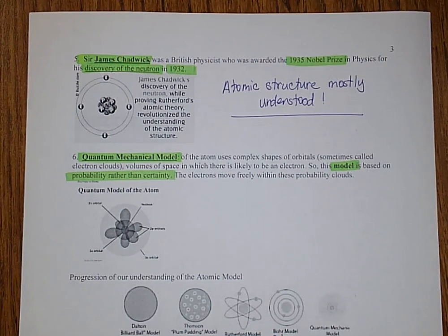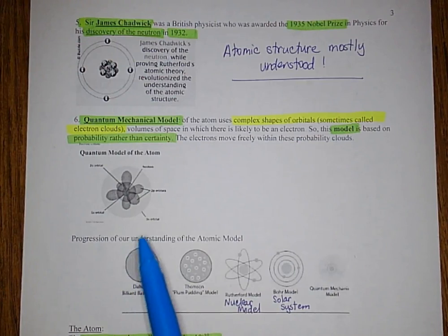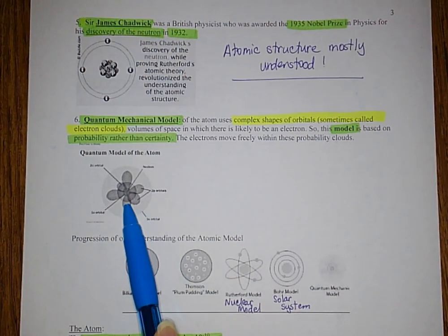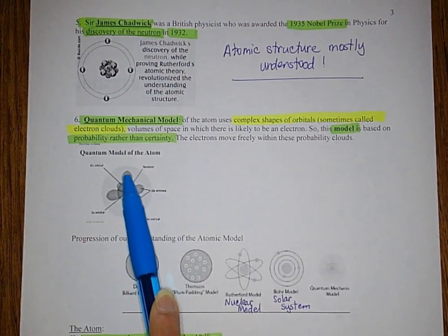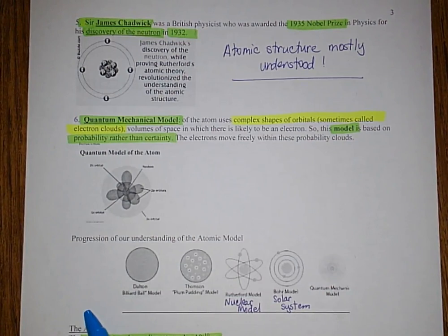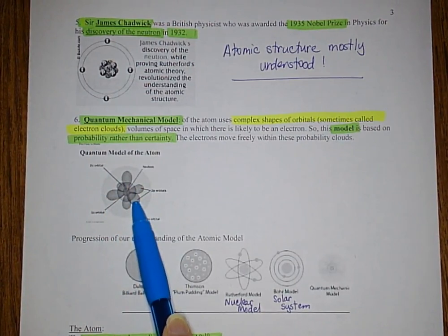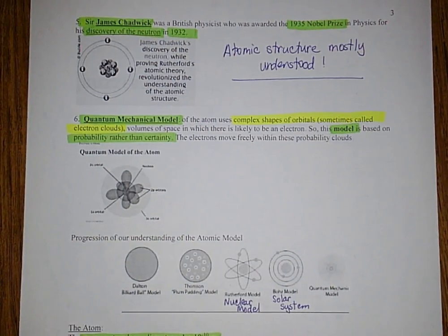The last model I want to discuss is the quantum mechanical model of an atom. This model says that electrons exist in a volume of space around the nucleus. These volumes of space have complex shapes called orbitals, or electron clouds. The model states that we can predict a probability that an electron is in one of these orbitals, rather than saying with certainty that it is in a specific location. These electrons move freely within these probability clouds.